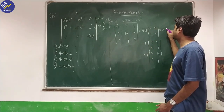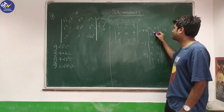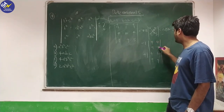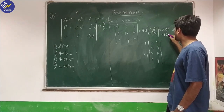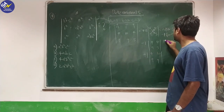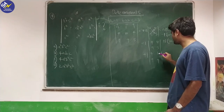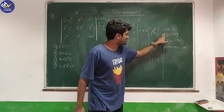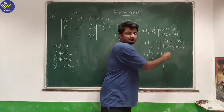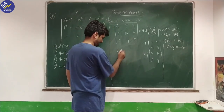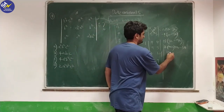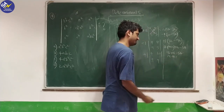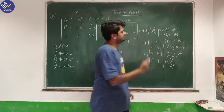Now computing each 2×2 determinant: the first term is +13 × (10×5 − 9×4) = 13 × (50 − 36) = 13 × 14 = 182. The second term is −1 × (4×5 − 4×9) = −1 × (20 − 36) = +16. The third term is +1 × (4×9 − 10×9) gives −54. So the total is 182 + 16 − 54 = 144.